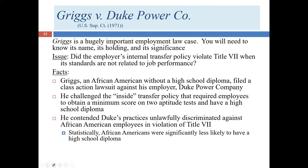The events Mr. Griggs complained about happened in the 1960s. Mr. Griggs was a worker at Duke Power Company, one of the public utilities in North Carolina, and he did not have a high school diploma. Nowadays it's more common for people to have high school diplomas than it was back then. In the African-American community at that time, many folks had to go to work before they were able to get their high school diploma.